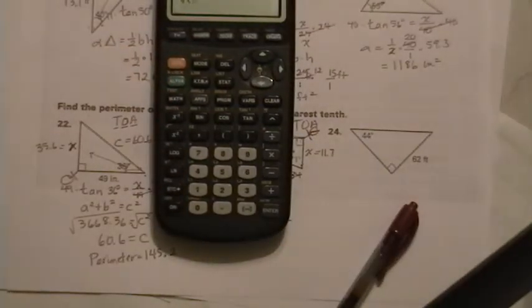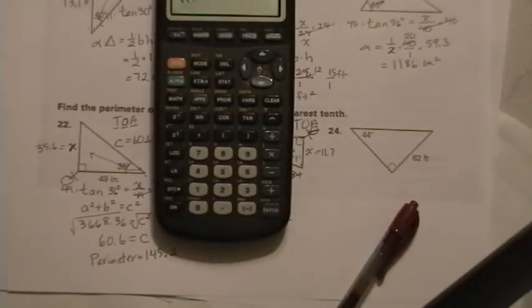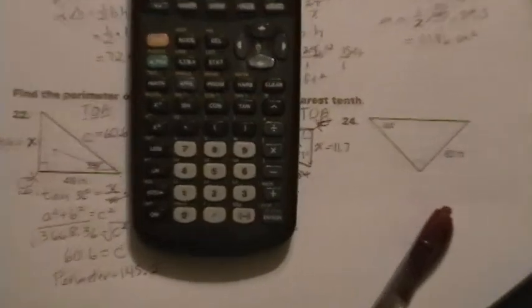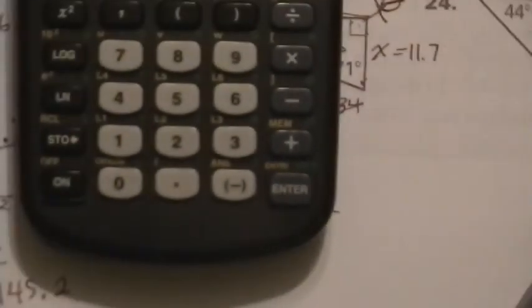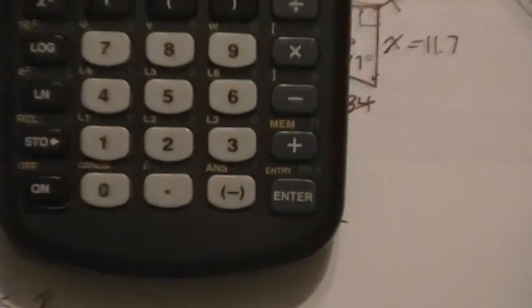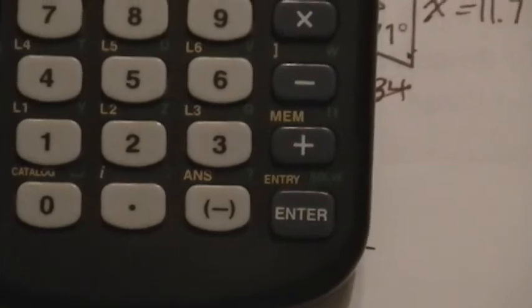Right above your negative sign is the letters ANS, are the letters ANS. That means answer. And since it's in yellow, you know you have to press the second function button, which is to use the yellow, whatever's the yellow there.